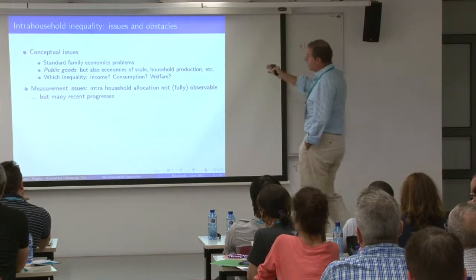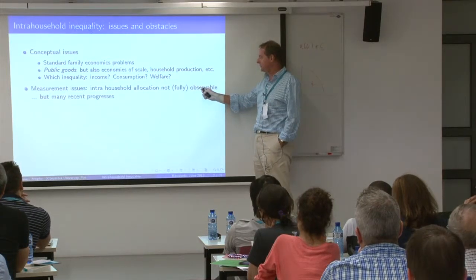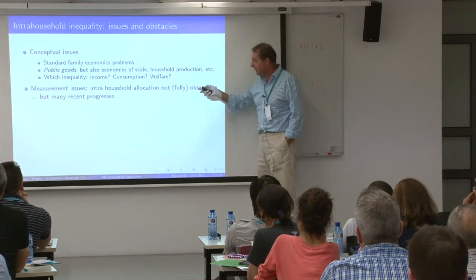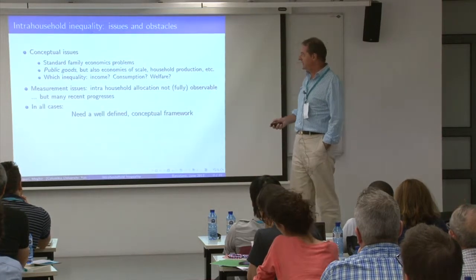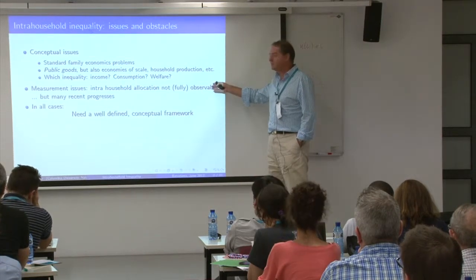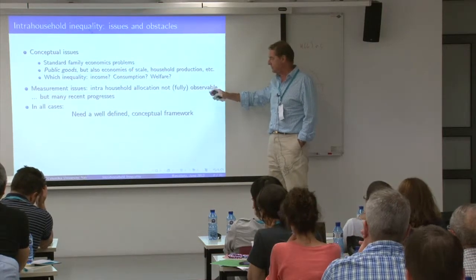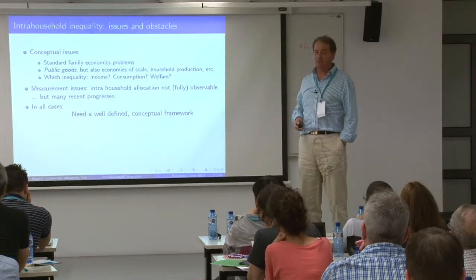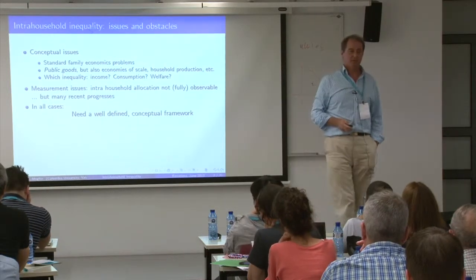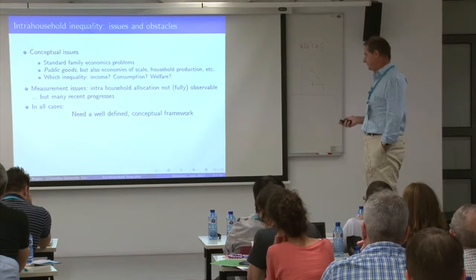I have measurement issues. The problem is that intra-household allocation is not fully observable, but we've made progress recently. What I'm going to tell you is what's identifiable and what kind of data you need to identify it. In all cases you need a model — a model of household behavior. There is no way you can do that without a structural model.